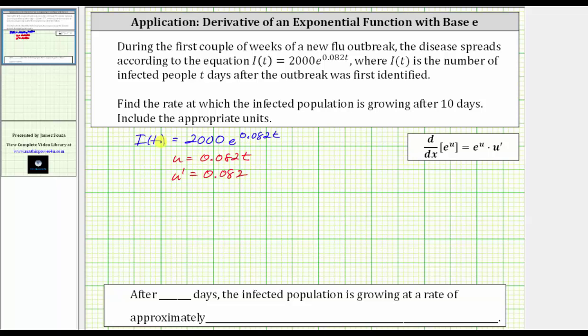And now we can find I'(t). I'(t) is equal to 2000 times the derivative of e^(0.082t), which gives us 2000 times e^u times u', which is e^(0.082t) times 0.082. And now simplifying, 2000 times 0.082 equals 164, giving us I'(t) = 164e^(0.082t).